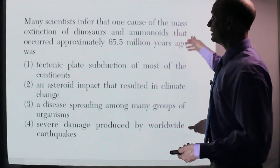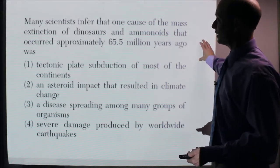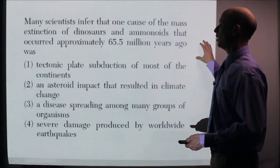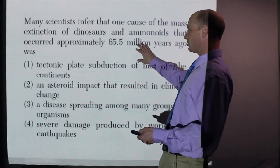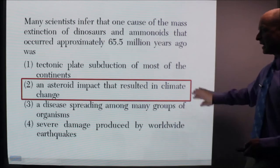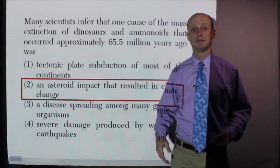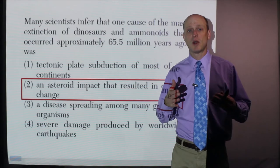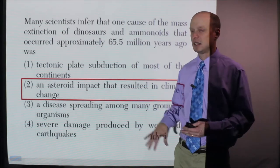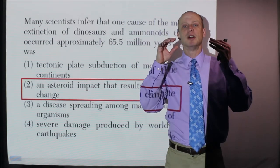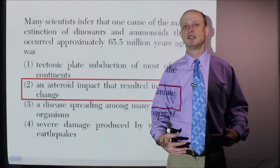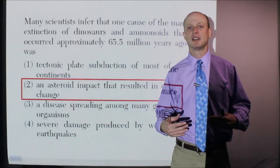Here's a question: Many scientists infer that one cause of the mass extinction of dinosaurs and ammonoids that occurred approximately 65.5 million years ago was an asteroid impact that resulted in climate change. You can get a variety of questions about it, but really the dinosaurs 65 million years ago extinction due to meteor impact is the thing to know.